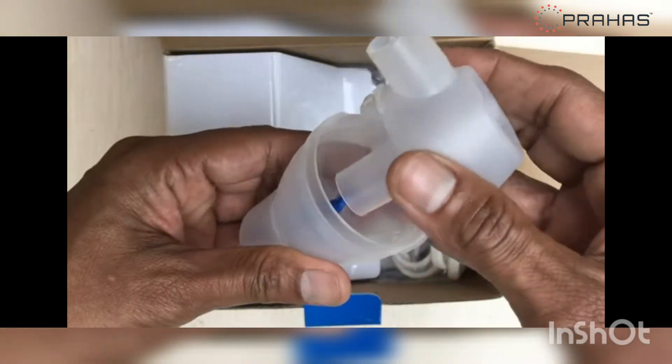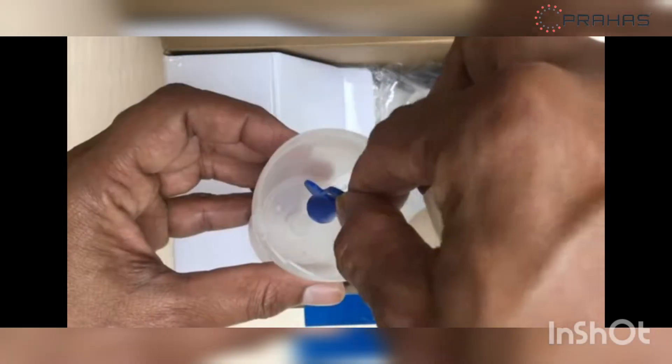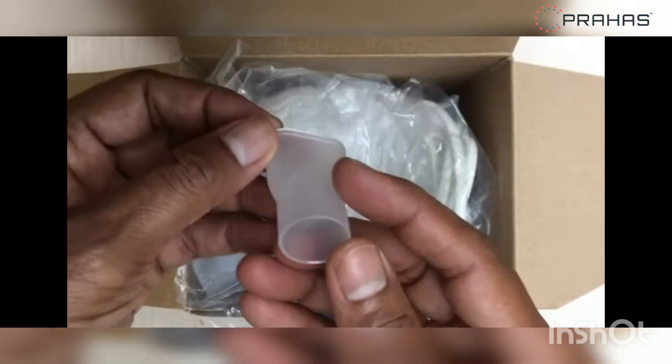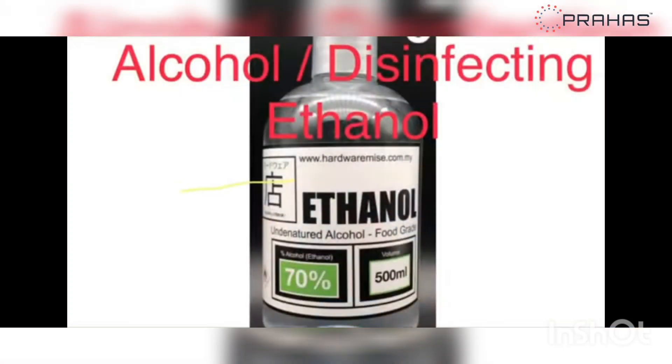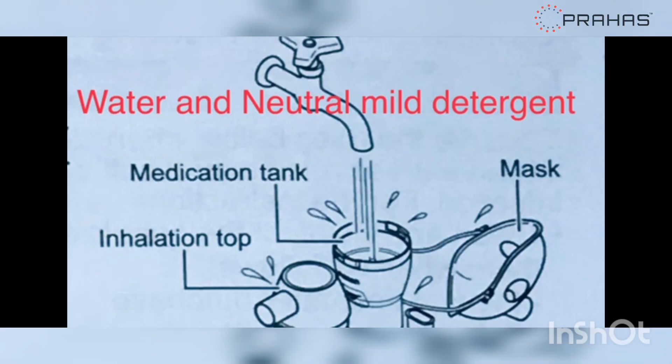The parts like the inhalation top, vaporizer head, medication tank, mouthpiece and the mask can be cleaned using commercially available disinfectant or simply using warm water and neutral mild detergent.